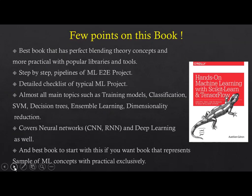It covers almost all main topics such as training models, classification, support vector machines, decision trees, ensemble learning, and dimensionality reduction with required theory and more practical content. It also covers neural networks and deep learning. It's the best book to start with if you want a resource representing ML concepts with practical work exclusively, and you will also come to know different IDEs and libraries.